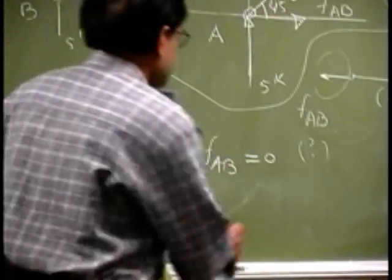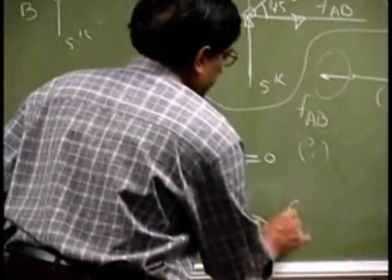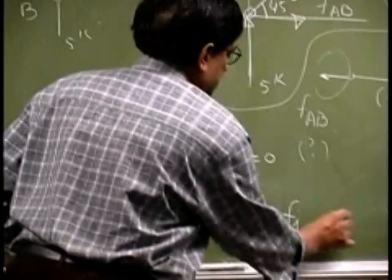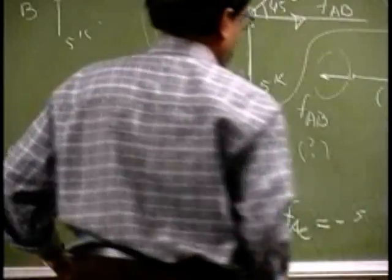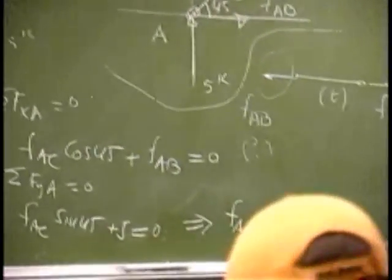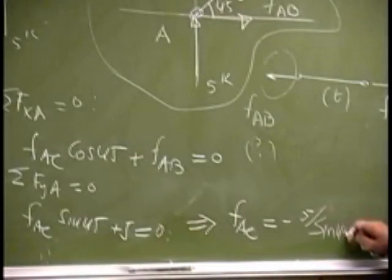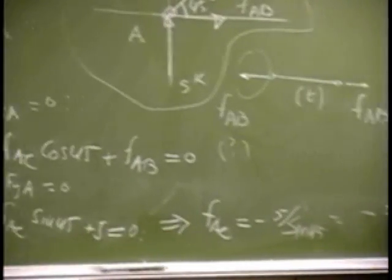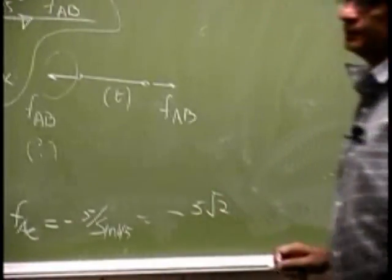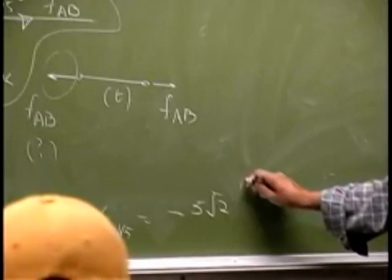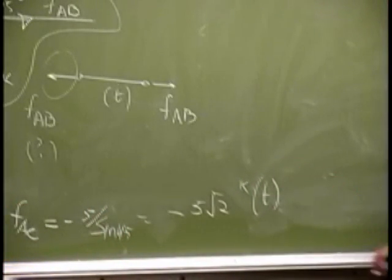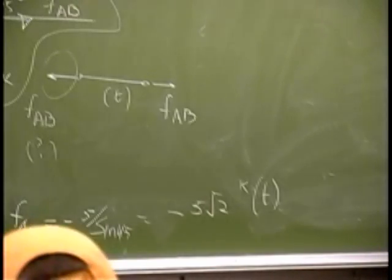So from the second equation, we get FAC as negative 5, and you can divide this by sin 45, or negative 5 is square root of 2. So that is in kips. That is in kips, and the assumption was that it is in tension.